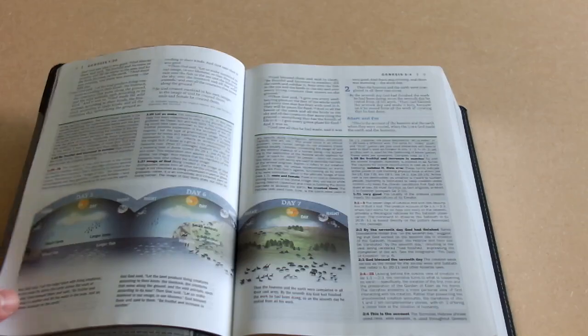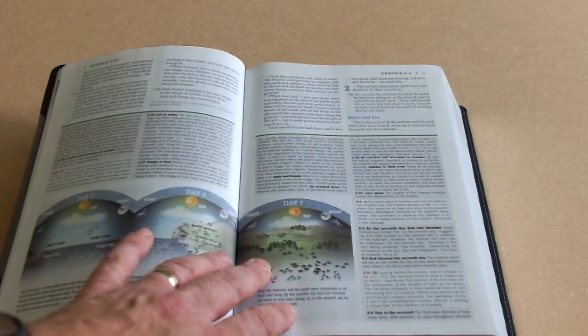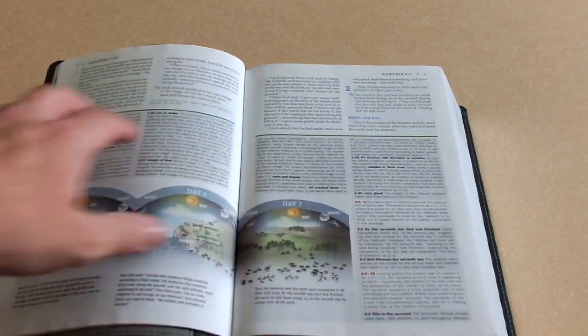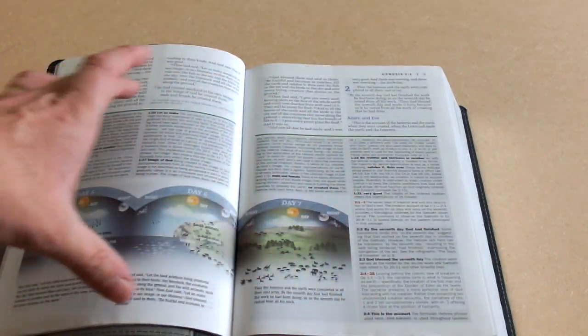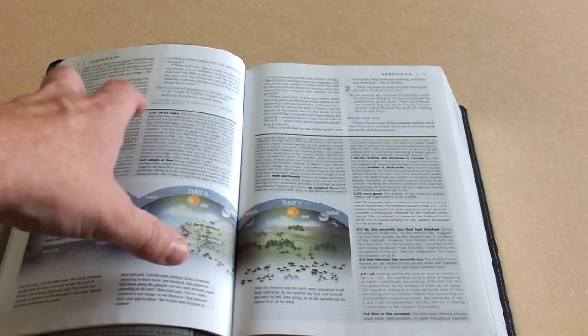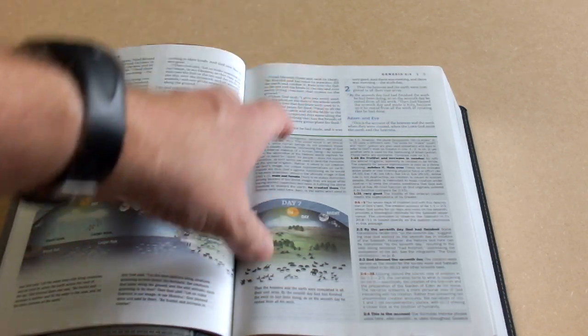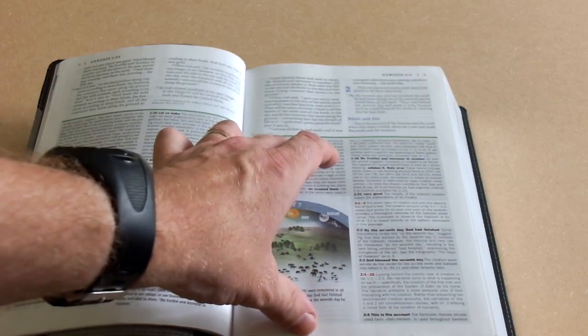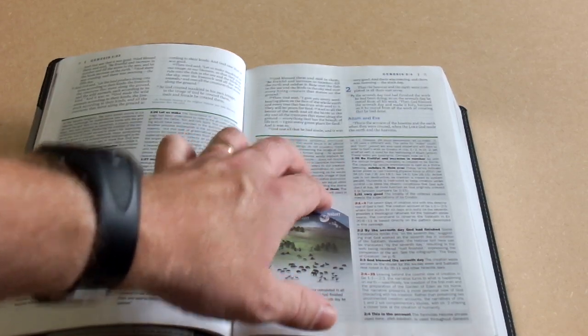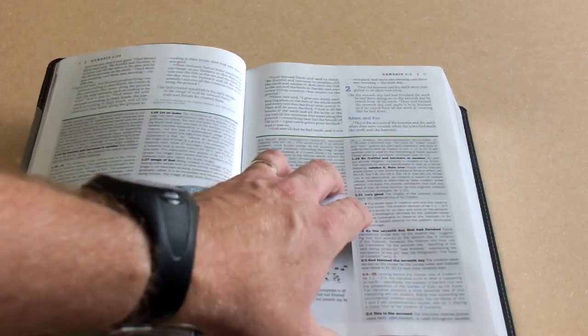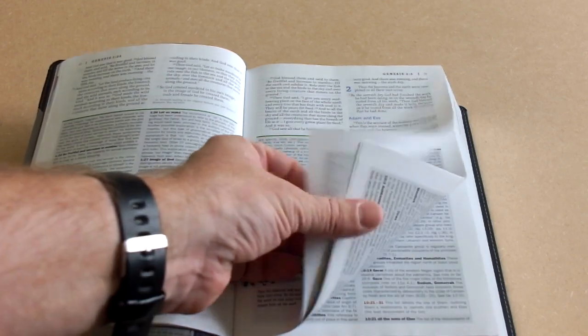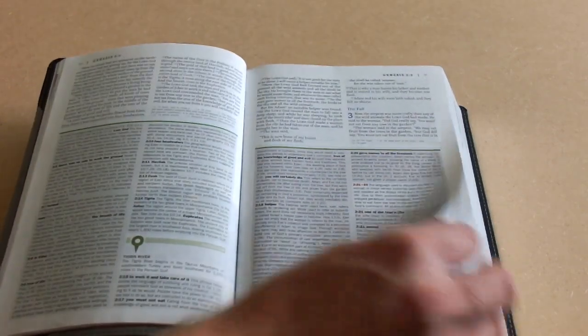With study Bibles, you tend to find a lot of the pictures and diagrams and things tend to show through anyway, even if it is line matched. So that's not a problem. Going over the page there, you can see the end of that creation diagram. And in the bottom of the page, you've got the study notes. They're delineated from the text by a green bar and it's in a slightly different colored paper. It's quite easy to read. The study notes are very easy to find.